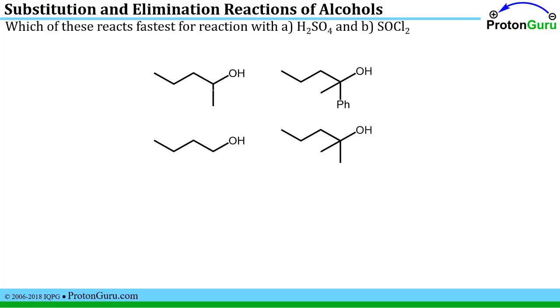So now that we've had some practice with looking at different reagents reacting with alcohols and determining what type of reaction could take place at these centers, we can figure out which of these types of substrates reacts fastest with, in part A, sulfuric acid, or part B, thionyl chloride. So we have to ask ourselves, well what kind of reaction is it when we use sulfuric acid? What kind of reaction is it when we use thionyl chloride?